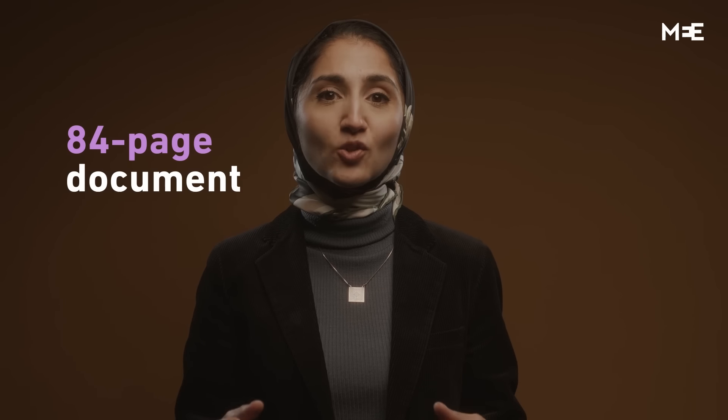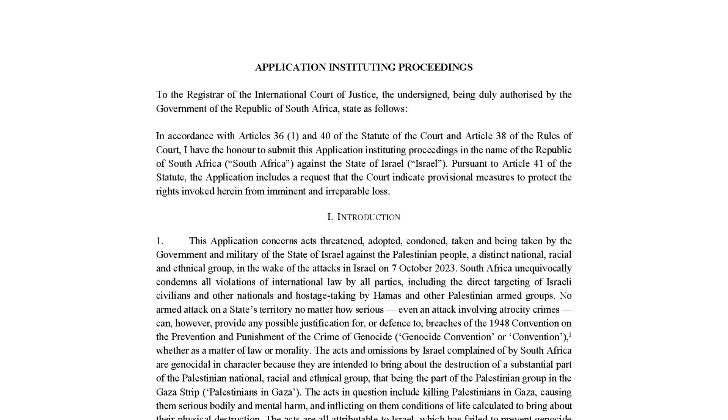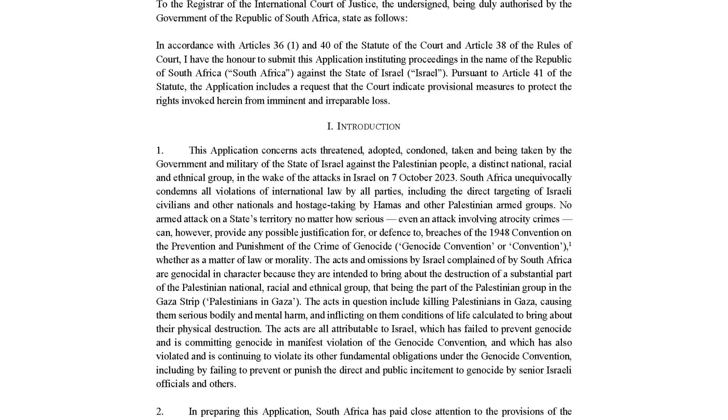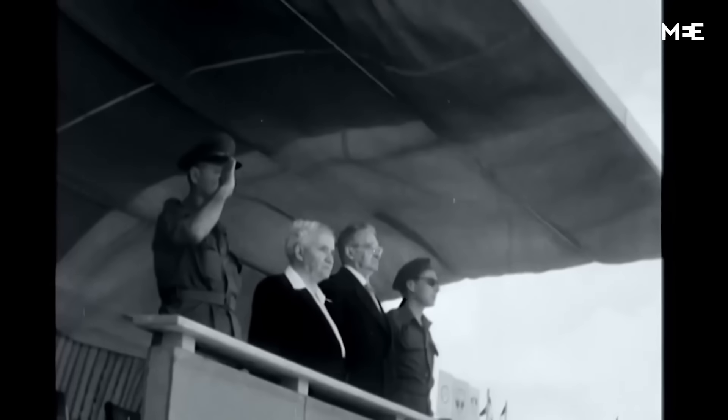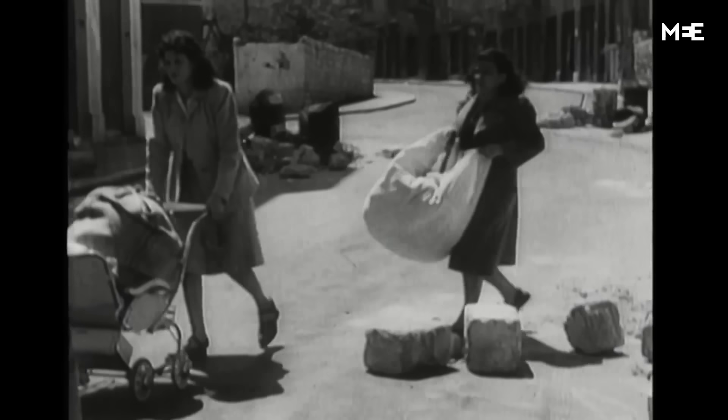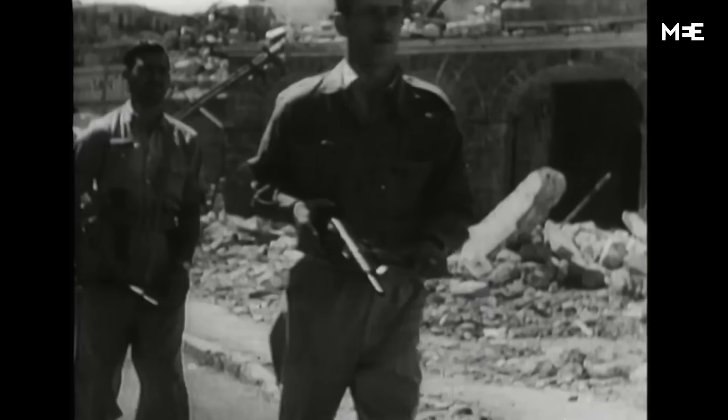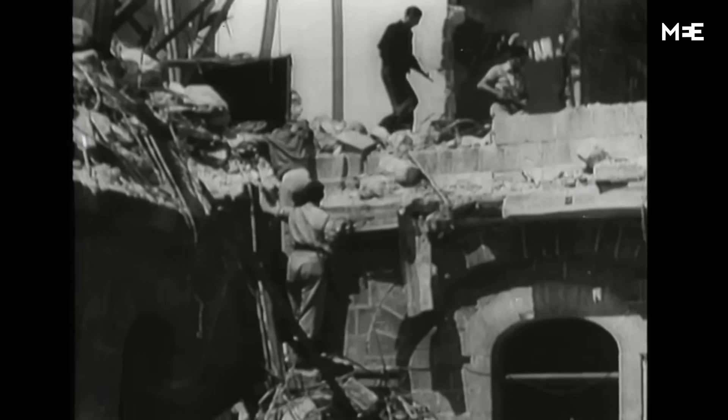In an 84-page document, South Africa has gone into exhaustive detail, outlining the precise ways in which it believes Israel has violated the Genocide Convention. South Africa frames its case in the context of apartheid — an institutionalized regime of oppression and domination by one racial group over another, according to Amnesty International. The atrocities committed on and since October 7 were preceded by Israel's 75-year-long apartheid, its 56-year-long belligerent occupation of Palestinian territory and its 16-year-long blockade of Gaza. Before a hearing scheduled for January 11 and 12, here are the key takeaways from the document.